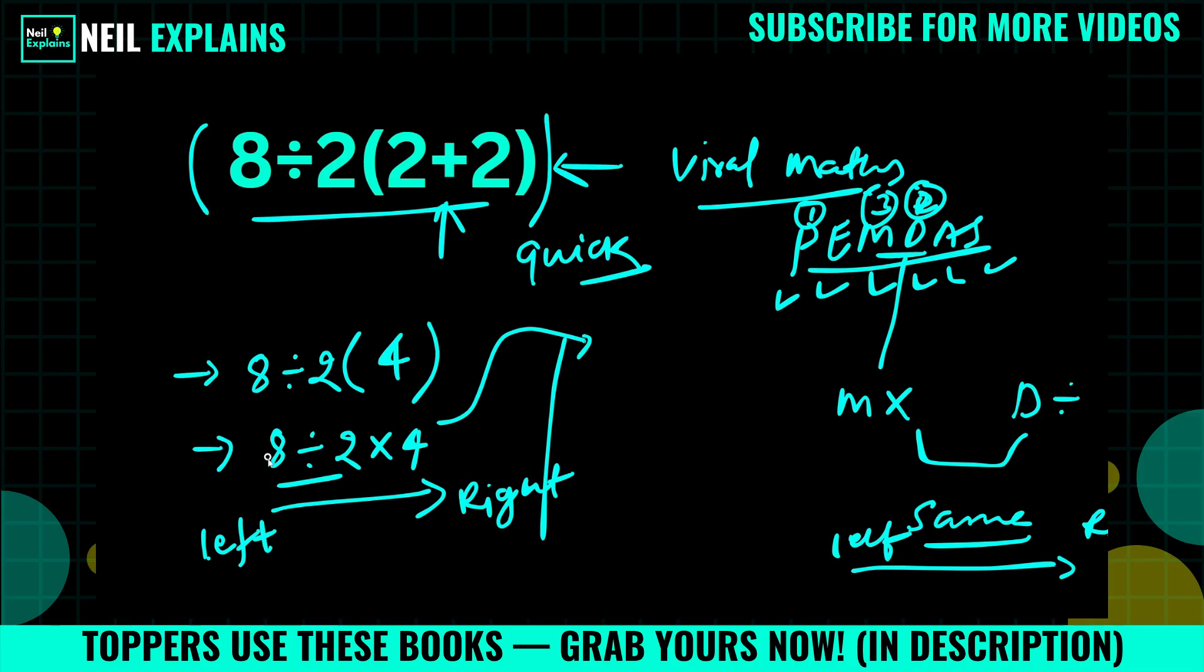So in this equation, we will solve from left to right. Now what we have done: 8 divided by 2, because this one is at the left-hand side. 8 divided by 2 is 4. Now 4 into 4, that is 16. This is the right answer.